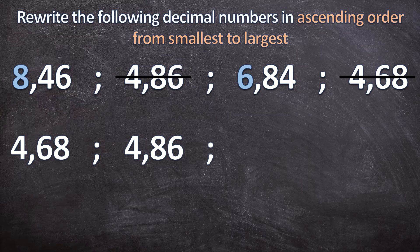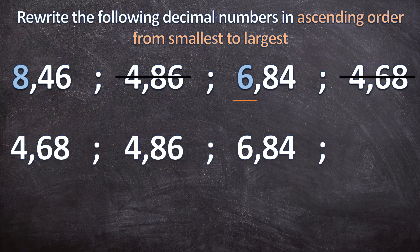Now all that we have left is 8,46 and 6,84. We start again by comparing the ones: 6 is smaller than 8, so 6,84 is smaller than 8,46. We write down 6,84 and cancel it, and our last number is 8,46. So the ascending order is: 4,68 — 4,86 — 6,84 — 8,46.